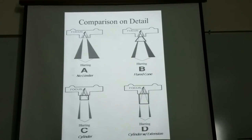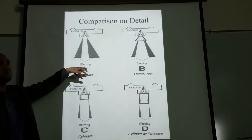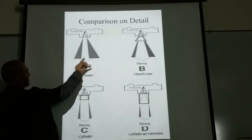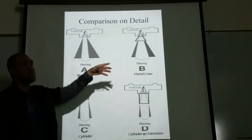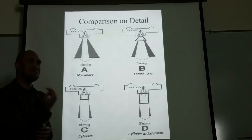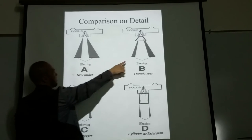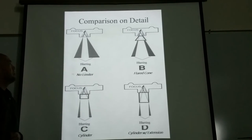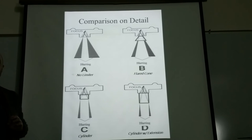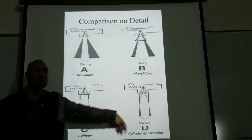Comparing the types: without any limiter, you get excessive blurring on the edges. With a flared cone, it matches beam divergence but still doesn't completely clean out the edges — better than nothing, but minimal improvement. With a cylinder cone, it truly limits beam size and minimizes blurring. Using a cylinder cone with an extender cleans out even more blur.